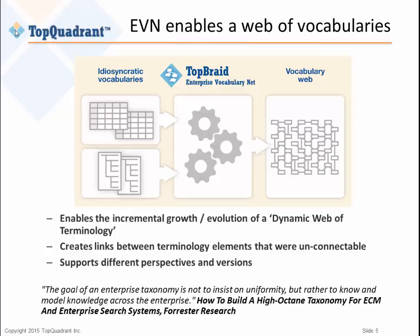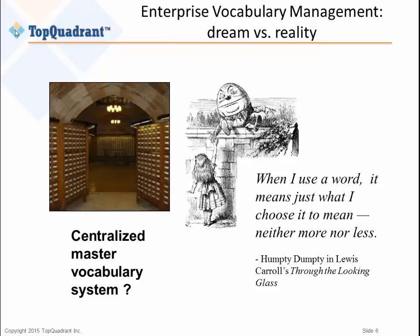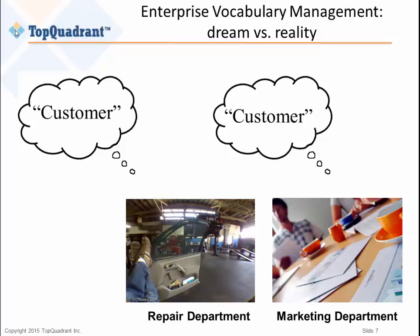This ability to grow incrementally and organically means you don't have to start off with some giant top-down plan. We've had customers say they need a taxonomy manager because different people in their company use the same word to mean different things. But in large organizations, sometimes different people have perfectly good reasons for using the same term differently — a classic example is the word customer. In the repair department, a customer is someone who walks in with a broken thing to fix; in the marketing department, a customer is a modeling construct used for forecasting. If you force both departments to use the same definition, you're not serving either of them well, so people end up managing this on spreadsheets.